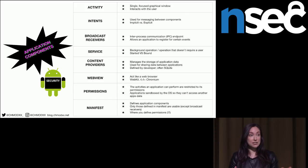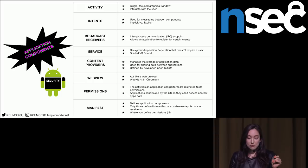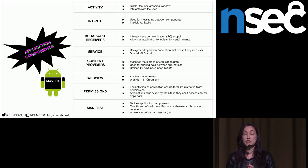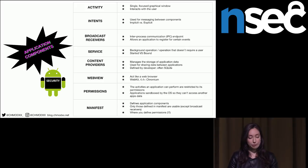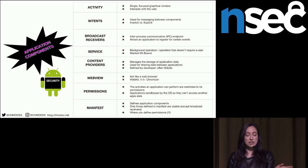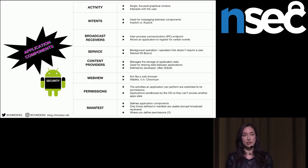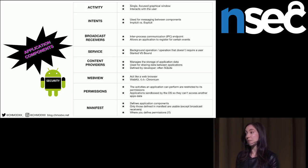Broadcast receivers are inter-process communication endpoints that allow an application to register for certain events. For example, a broadcast receiver could register for the SMS broadcast receiver so code is only executed when that event happens. Broadcast receivers are the only components in the Android application world that can be created at runtime. Services are essentially background operations that don't require user interaction. A started service doesn't require any ability to communicate back to the application that started it, whereas a bound service has to pass communication back to whatever started it.